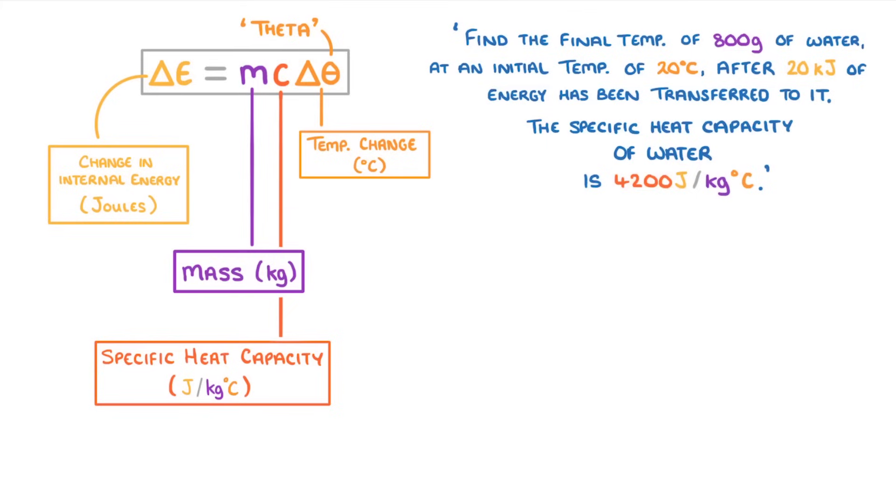Well in order to find the final temperature, what we're really looking for is the change in temperature. So to get that term by itself, we need to divide both sides by mc, giving us energy divided by mass times specific heat capacity equals change in temperature.